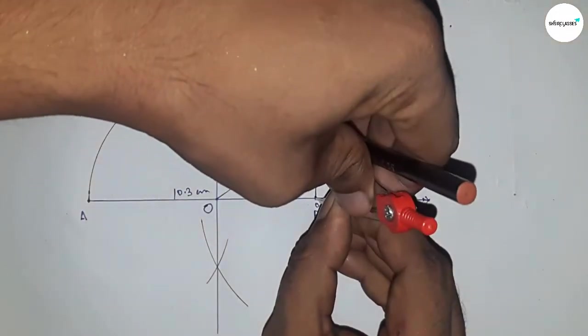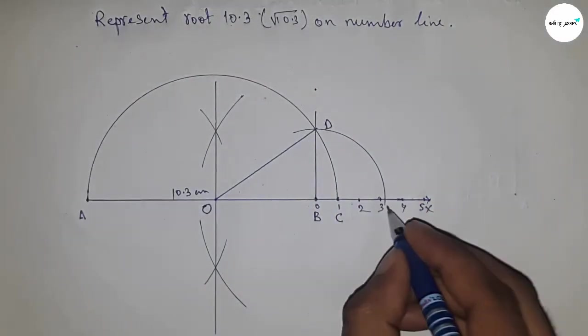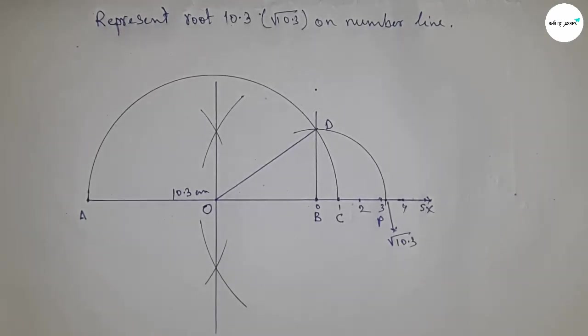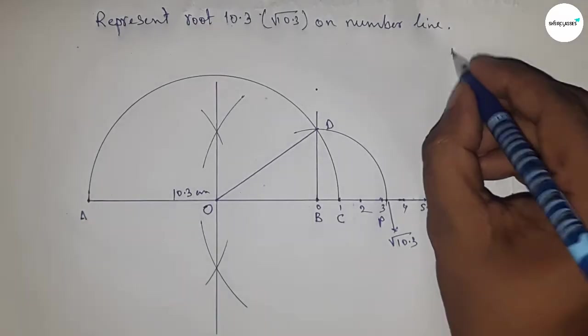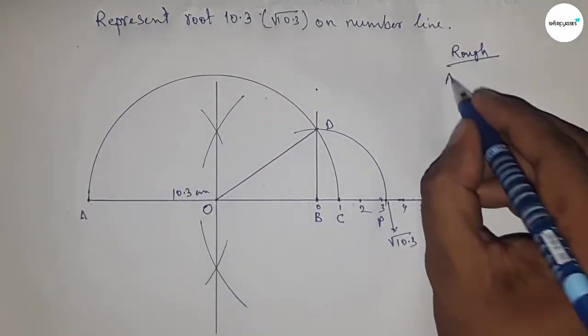Drawing an arc which meets the number line at point P, and this is the representation of root 10.3 on the number line. Okay, now roughly discussing the calculation. So given AB equals 10.3 centimeters.